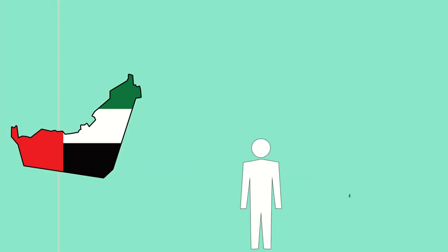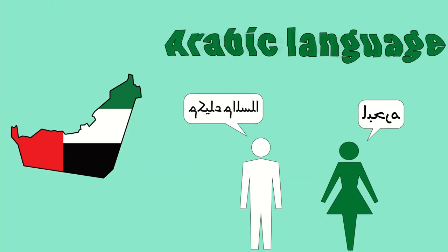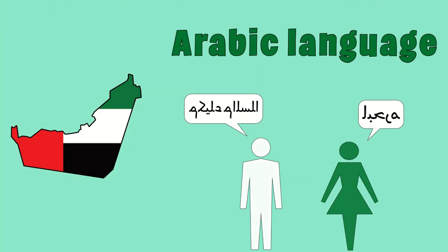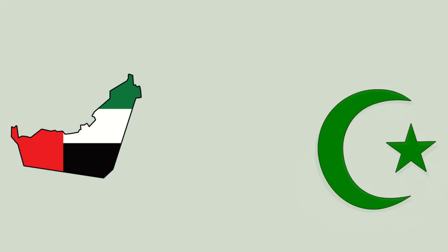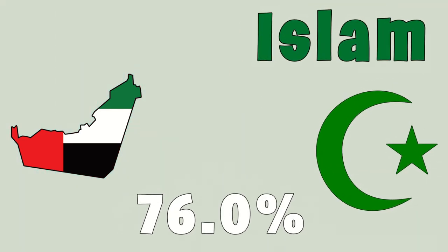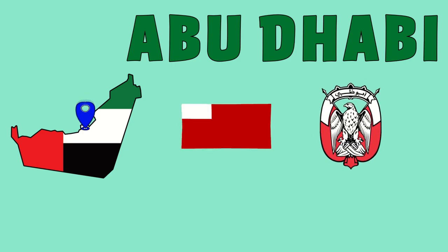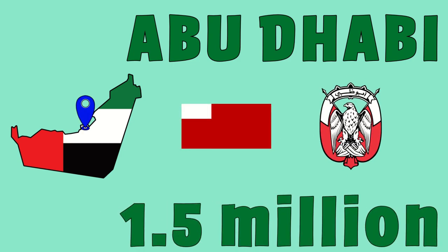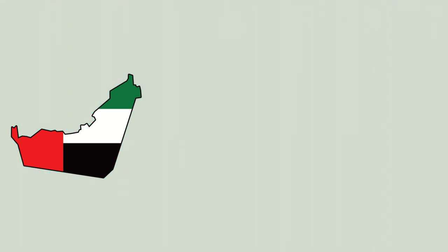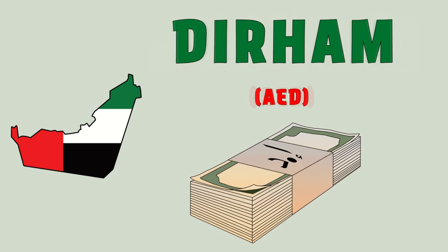The official language of the UAE is Arabic. The most prominent religion in the UAE is Islam at 76%. The capital of the UAE is Abu Dhabi with an urban population of around 1.5 million people. The currency of the UAE is the Emirati dirham.